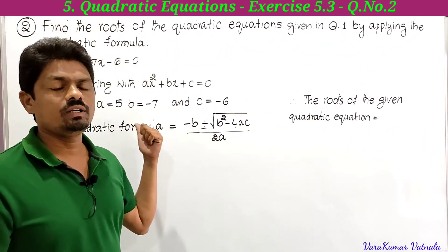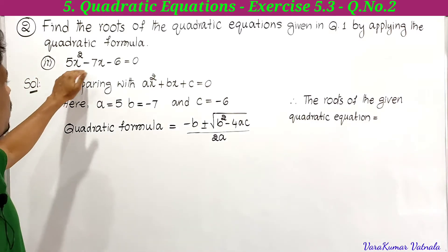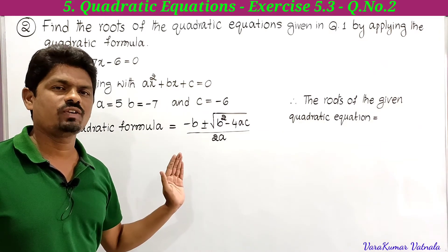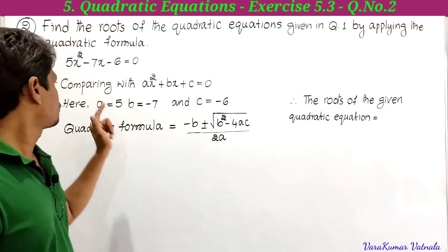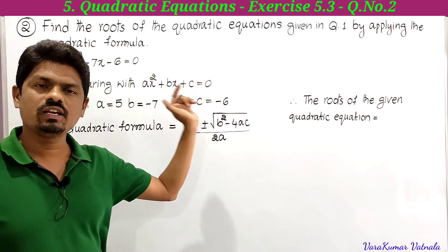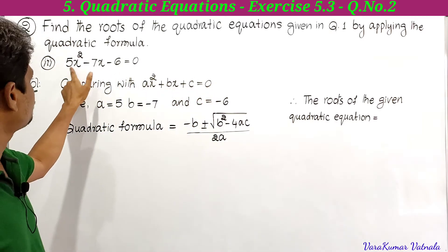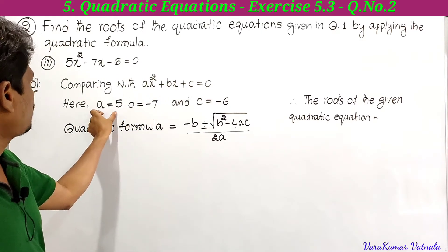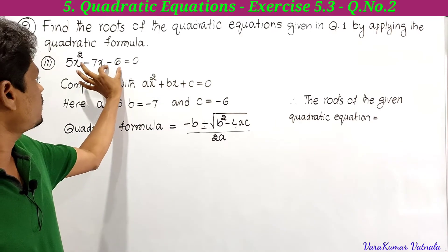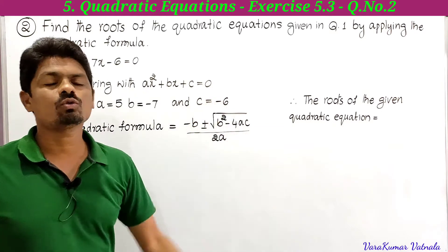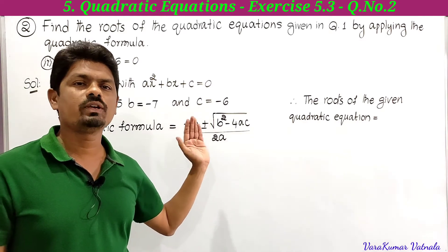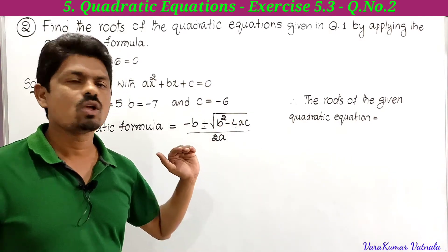Third part: 5x² − 7x − 6 = 0. We find the roots using the quadratic formula. Comparing with ax² + bx + c = 0: the x² coefficient is 5 so a = 5; x coefficient is −7 so b = −7; constant is −6 so c = −6. The quadratic formula is minus b plus or minus square root of b² minus 4ac divided by 2a.